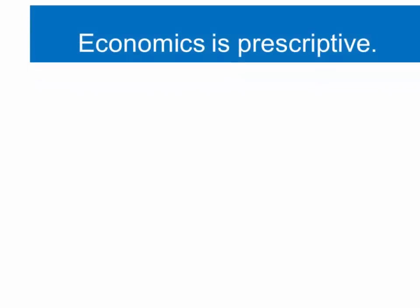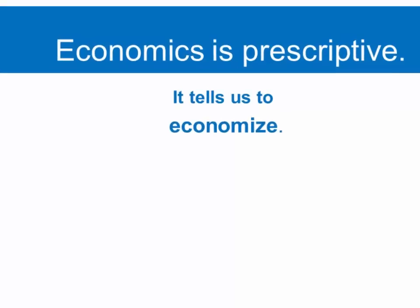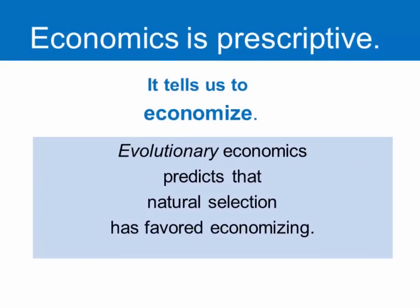So economics, as we know, is prescriptive. It tells us how to economize and that we should economize and exercise rational choice. So how's that related to evolution? And the answer is that what's called evolutionary economics predicts that natural selection favors economizing. And so there's this expectation in what we're going to look at next, an area of theory called optimal foraging theory, that animals including humans will act like economists. They'll weigh the cost and benefits, and they'll act in ways that are efficient and optimize their energy when they're out there gathering food and hunting prey.